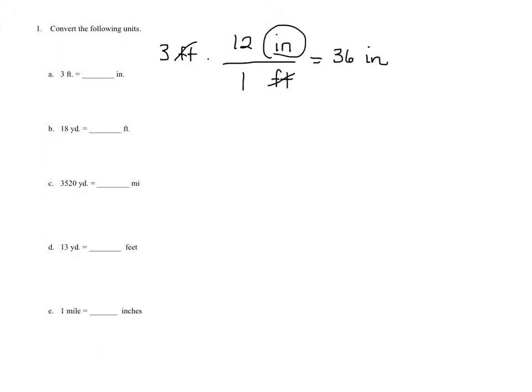Let's do the next one. 18 yards to feet. So 18 yards. Now I want yards to go. So it's going to go on the bottom. And feet is going to go on the top. There are 3 feet in 1 yard. So the yards will effectively cancel out, dividing out to get 1. So 54 feet, because 18 times 3 is 54.